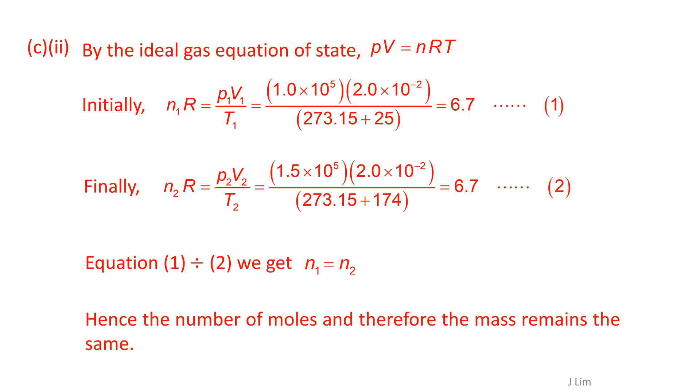By the ideal gas equation of state PV equals nRT, initially n1R is 6.7, finally n2R is also 6.7, therefore n1 equals n2. Hence the number of moles and therefore the mass remains the same.